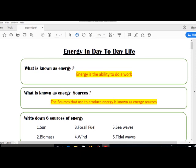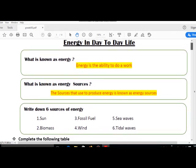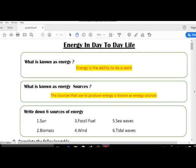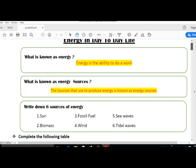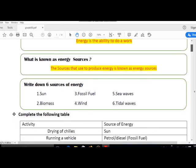The sources that used to produce energy is known as energy sources. Write down the six sources of energy: Sun, Biomass, Fossil fuel, Wind, Sea waves, and Tidal waves.